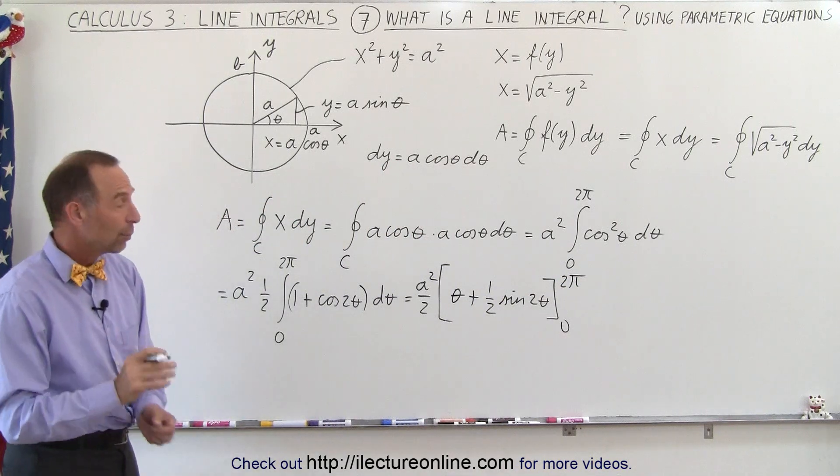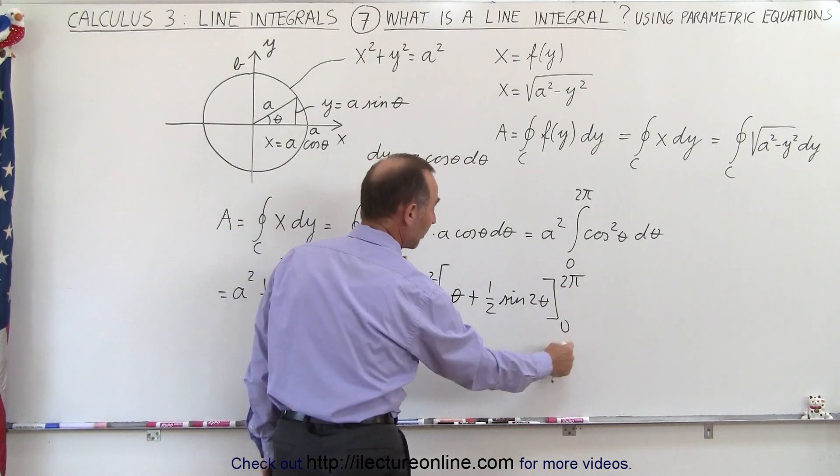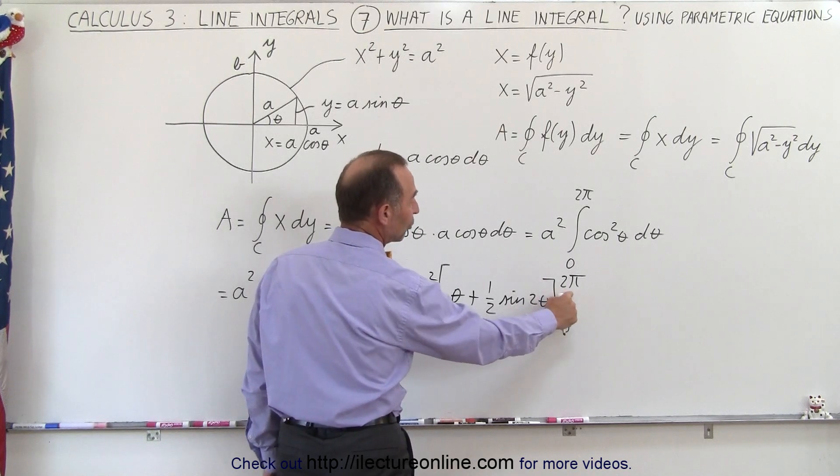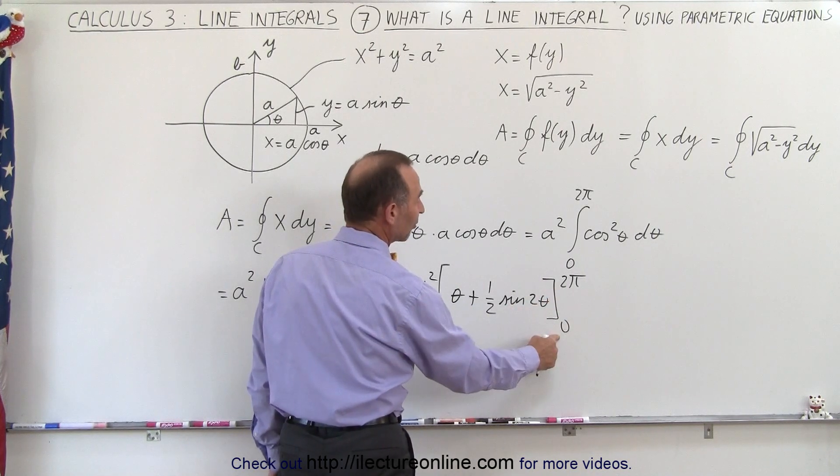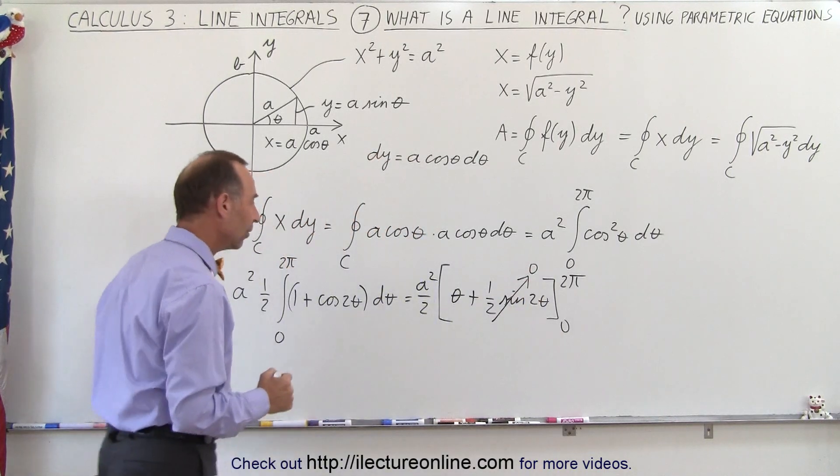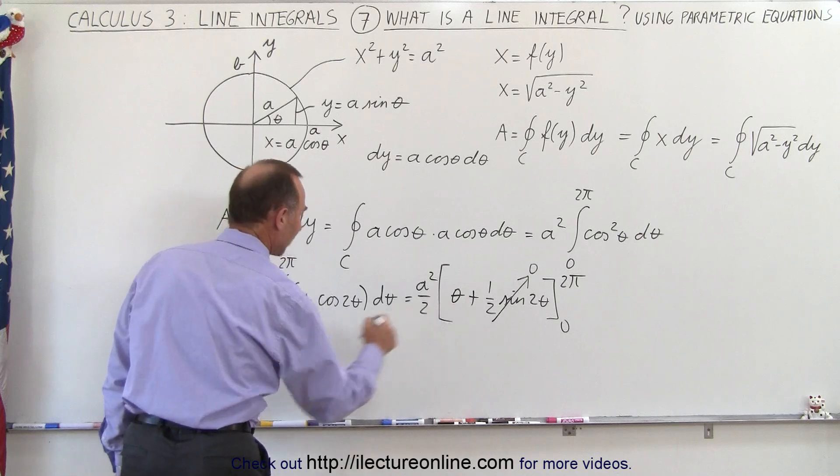Okay, now we realize that when we plug in the upper and lower limit into the sine of 2 theta, the sine of 2 times 2 pi is 4 pi, that would be 0, and the sine of 0 is 0, so this simply does not add to the result.